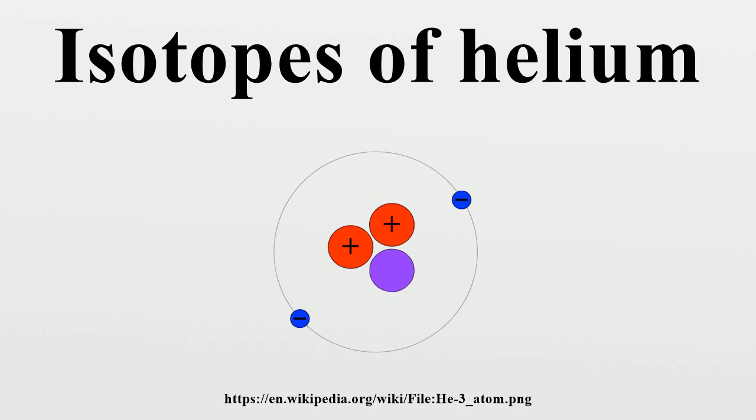For helium-3 to form a superfluid, it must be cooled to a temperature of 0.0025 K, or almost a thousand times lower than helium-4. This difference is explained by quantum statistics, since helium-3 atoms are fermions while helium-4 atoms are bosons, which condense to a superfluid more easily.